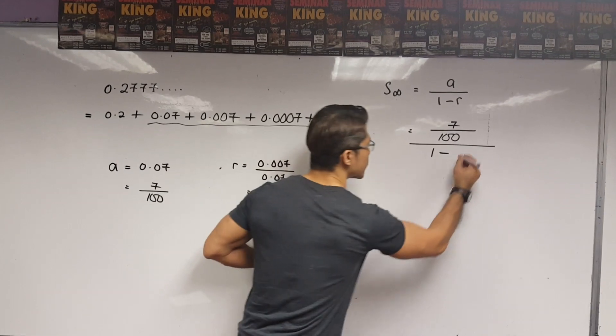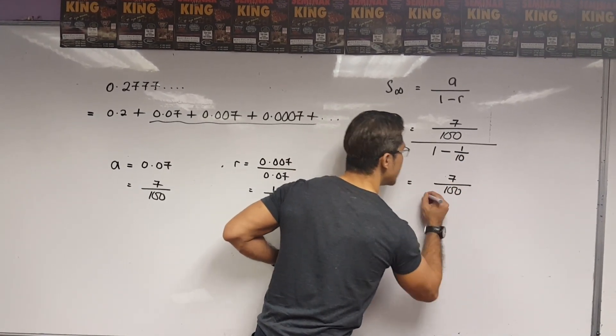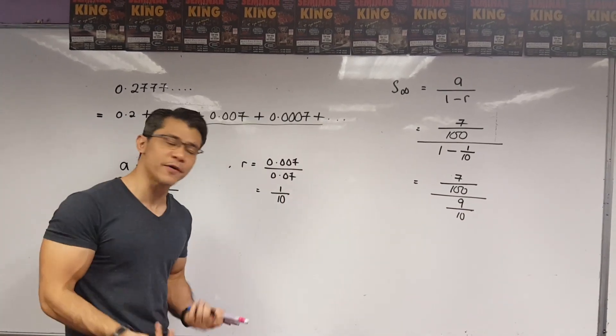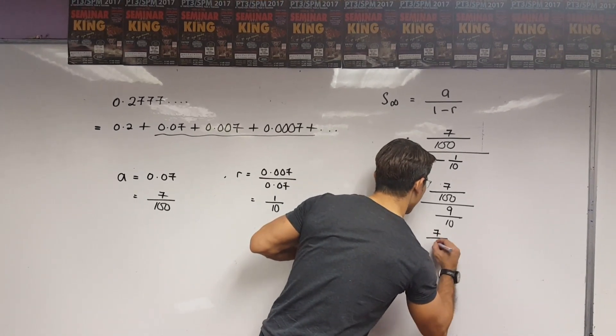So, A number is 7 over 100 over 1 minus the R number. We got the R number to be 1 over 10. So, that's 1 over 10. So, I have 7 over 100 over 9 over 10. Simplifying this, I obtain the answer, which is 7 over 90.